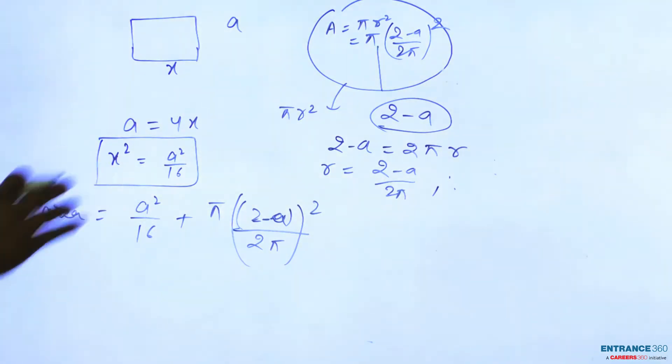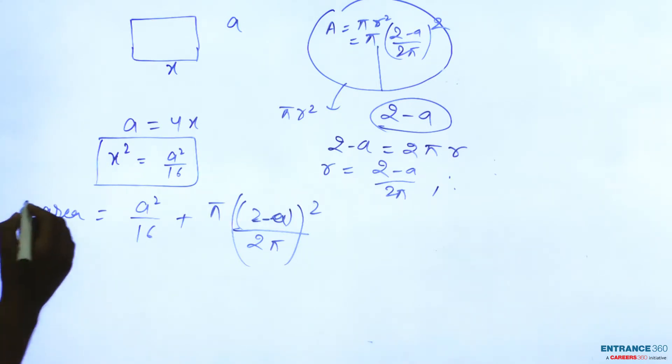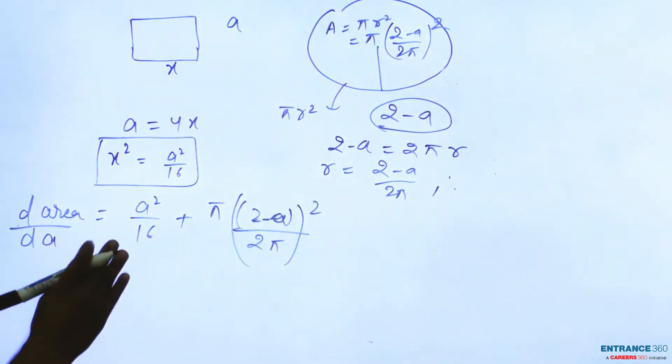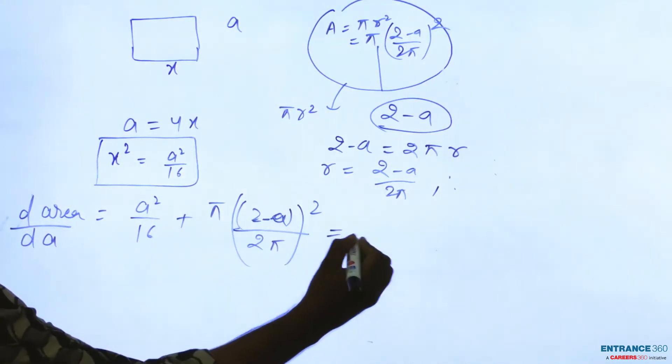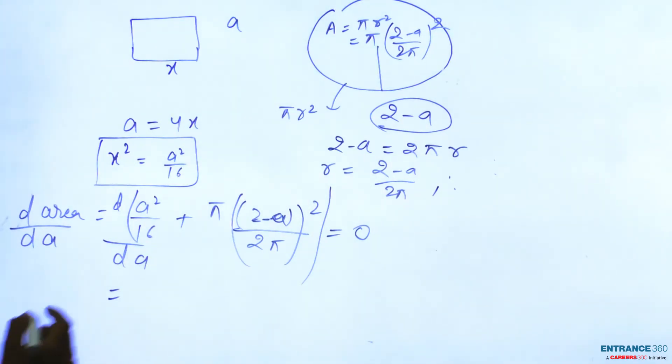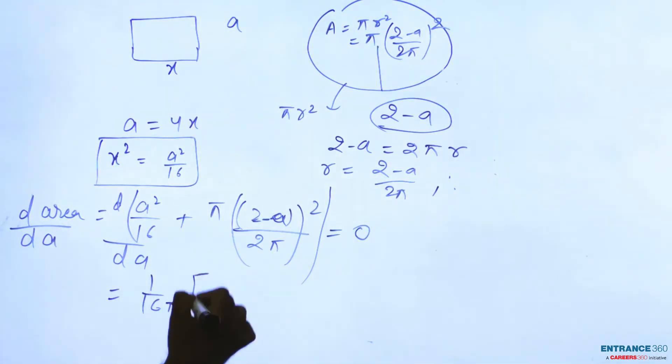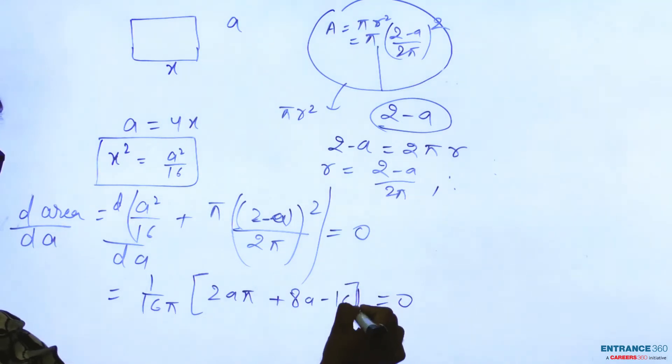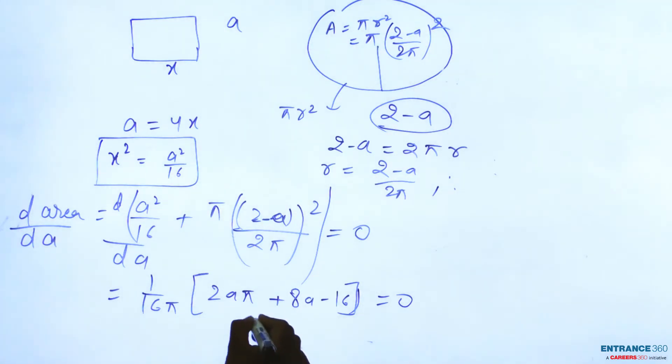Then we have to find the minimum value of these areas. So let me differentiate this term to find the minimum value of this area. Then it will be equal to 2a by pi plus 8a equal to 16.